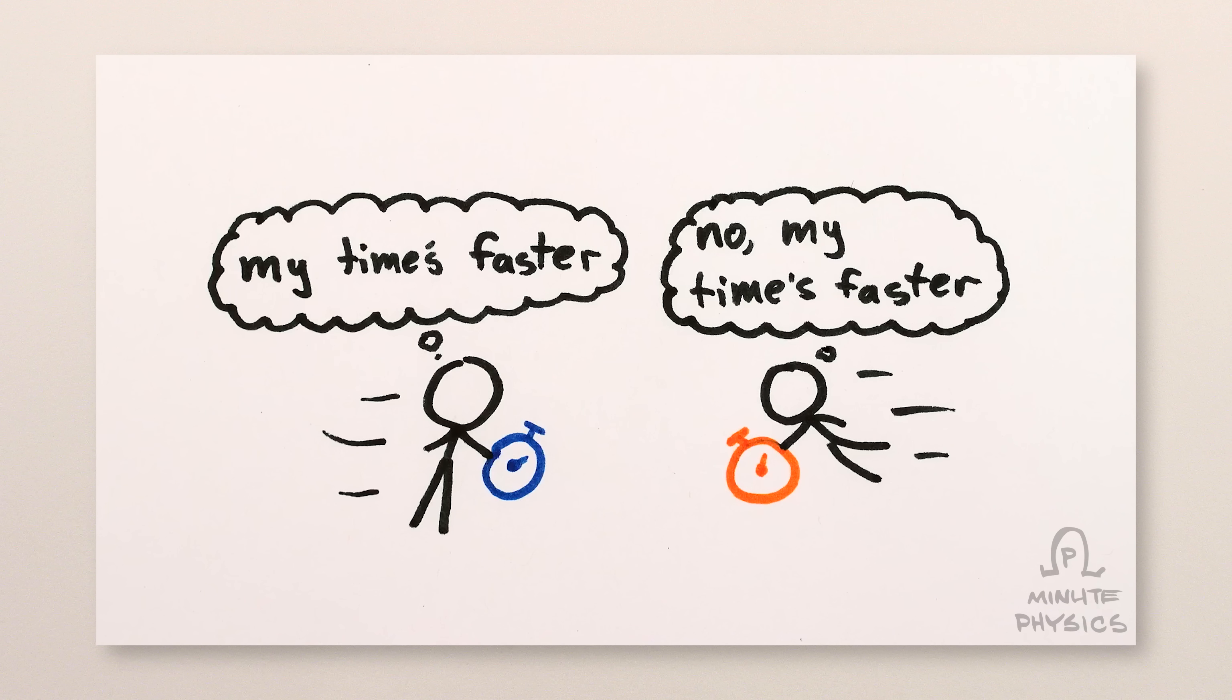The factor by which intervals are dilated depends on how fast we're moving relative to each other, and the expression looks like this. But it's really just saying, how much higher up in time is this point after a Lorentz transformation?